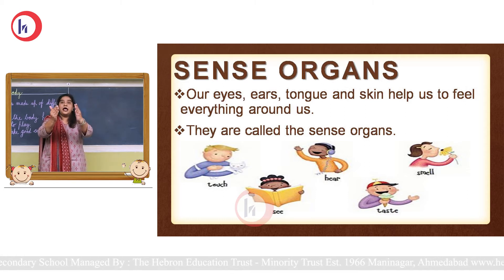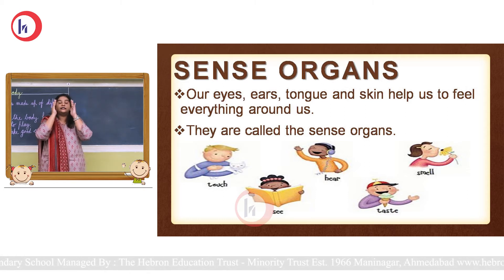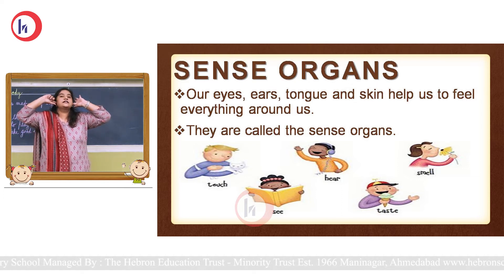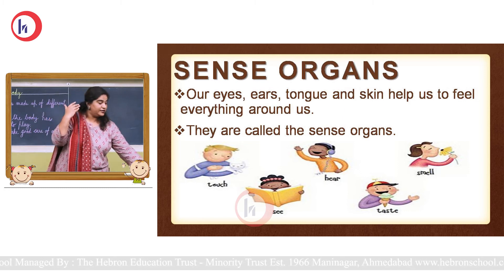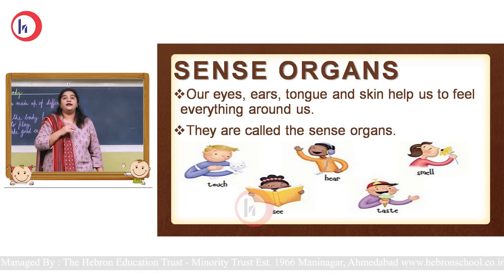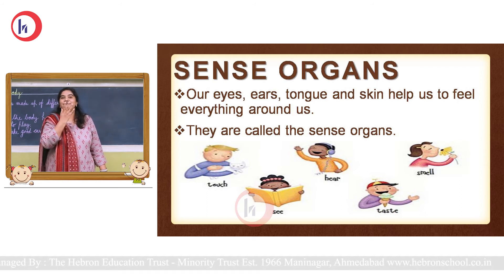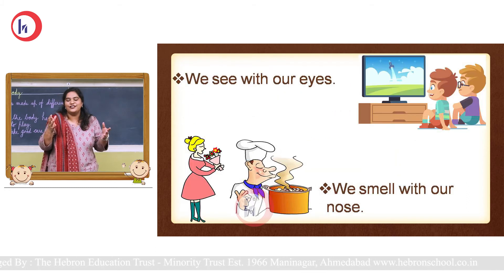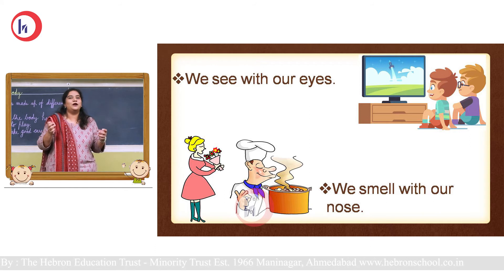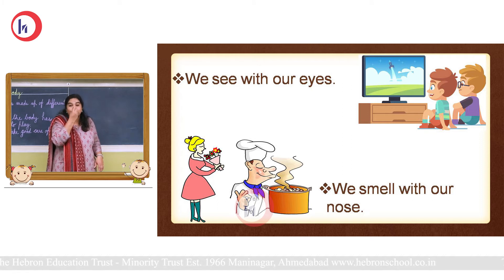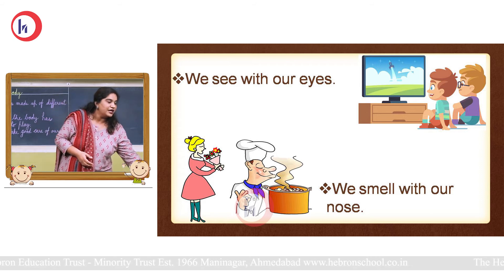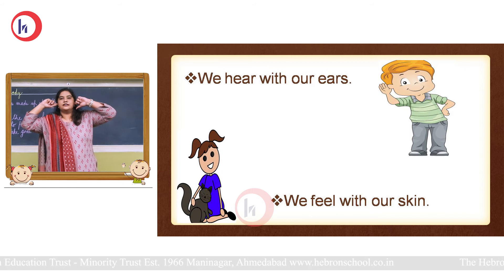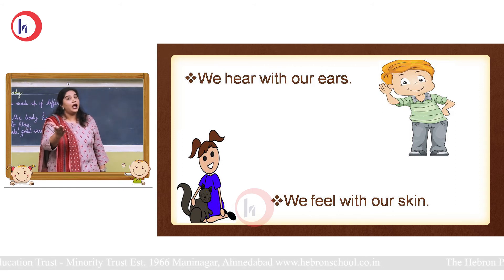If we close our eyes, we cannot see. So our eyes help us to see. If we close our ears, we cannot hear. So our ears help us to hear. If mummy is cooking your favorite food, how would you know? Through the smell! You smell with the help of your nose.